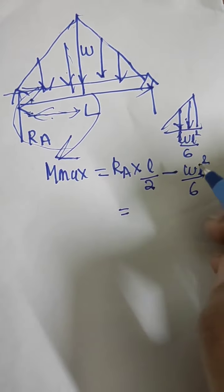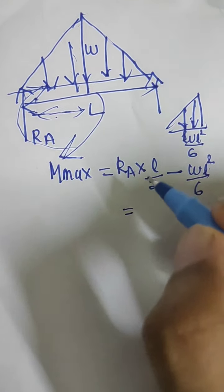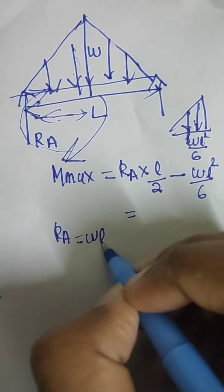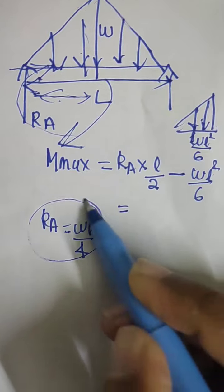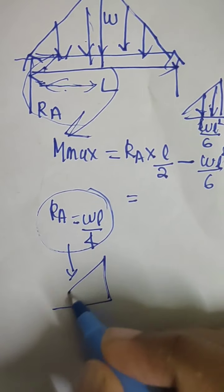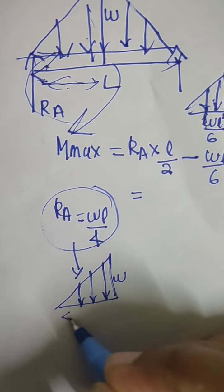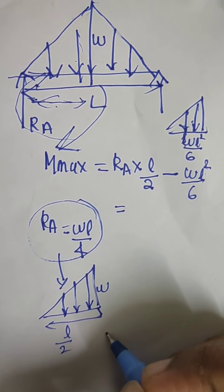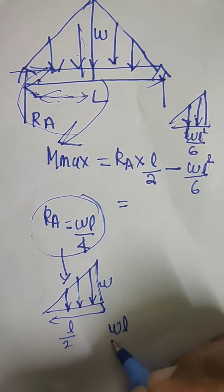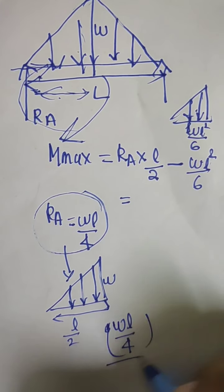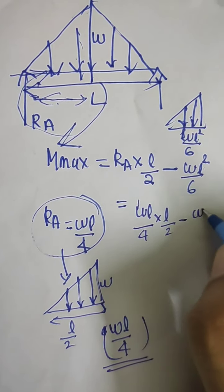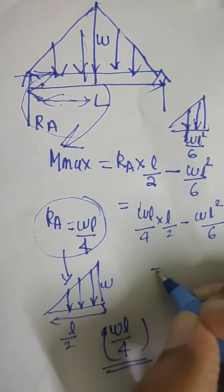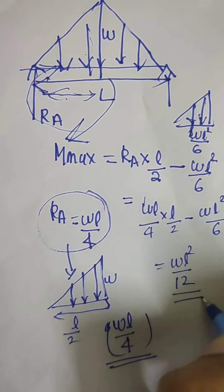Ra for this UVL simply supported case equals wl/4, since the total load is half × w × l acting at l/2, giving Ra = wl/4. Substituting: M_max = (wl/4) × (l/2) − wl²/6 = wl²/8 − wl²/6 ... which simplifies to wl²/12. So the maximum bending moment for a UVL on a simply supported beam is wl²/12.